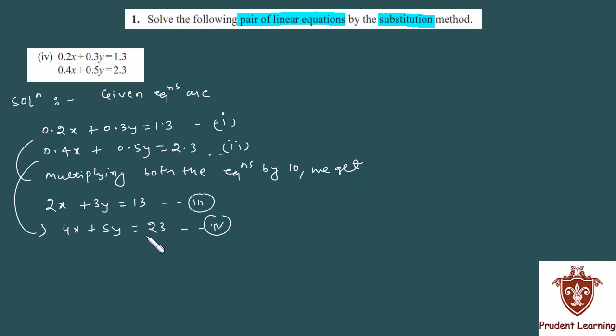Now, what do we do for the substitution method? We express a variable in terms of another variable. I will work with the fourth equation. 4x equals 23 minus 5y, which gives us x as 23 minus 5y upon 4.